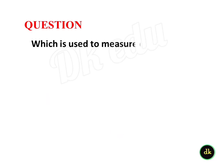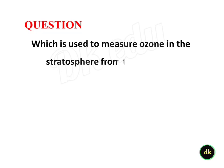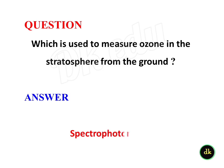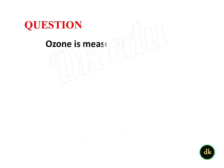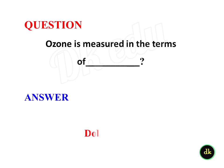Which device is used to measure ozone in the stratosphere from the ground? Spectrophotometer. Ozone is measured in the unit of Dobson units.